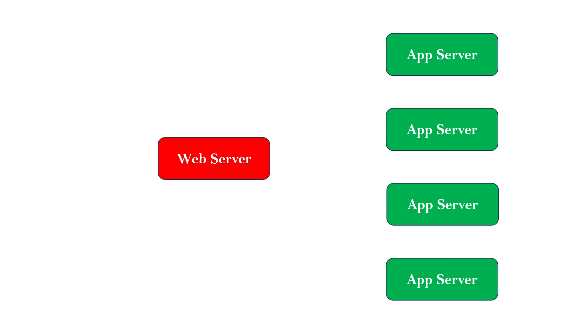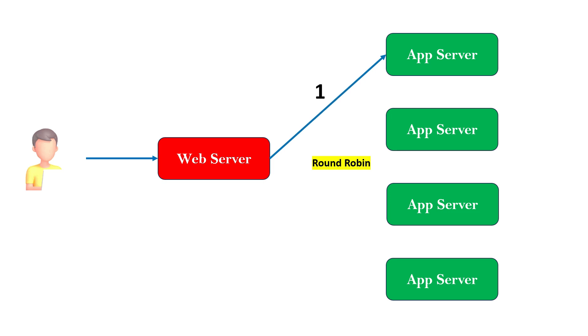If you have some idea of any web server and the integration of a web server with a backend application server — for example, a WebLogic application server — whenever we have such integration, we have a web server in front of the application server. There could be multiple web servers or multiple application servers based on your architecture or the high availability required. In the request flow, a user accesses a URL via browser, that request is served by the web server, and from the web server it goes to the backend application servers. If you have multiple application servers in the backend, the request will be forwarded to them in round-robin fashion to maintain proper load balancing.